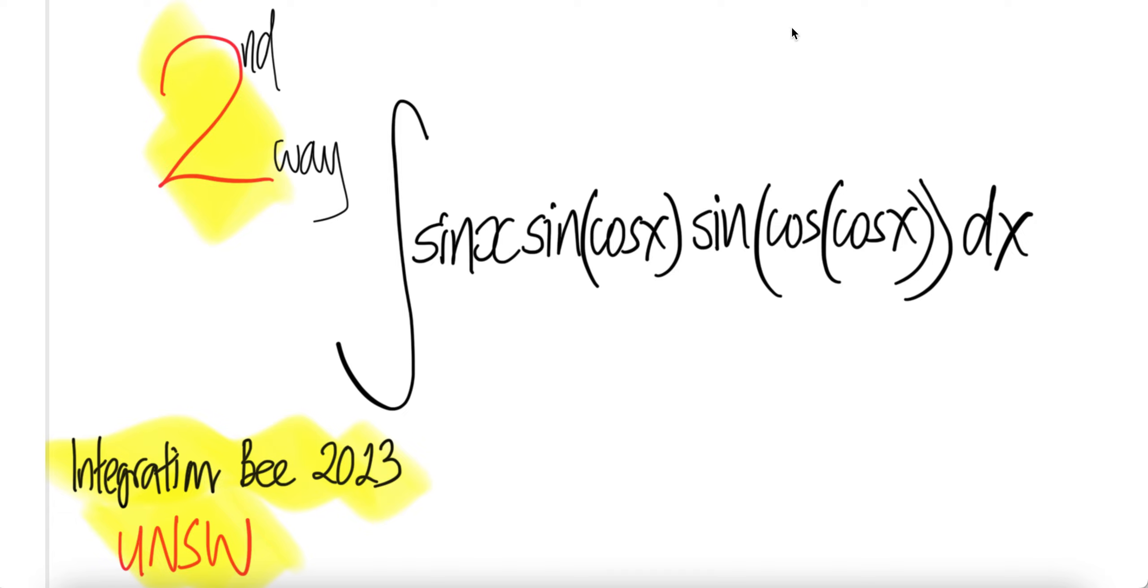We get sin(cos(cos x)) dx cos x. The integral of that is negative cos(cos(cos x)) plus c. Done.